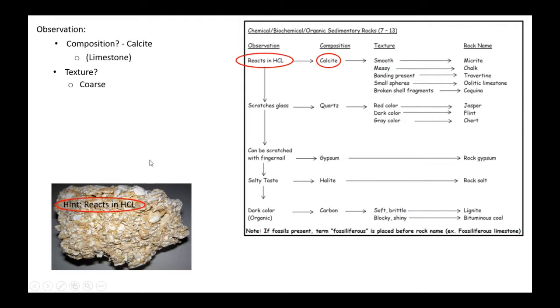If we look more closely, we will see that we have broken shell fragments. If you have broken shell fragments that are cemented together, this is a type of limestone called coquina.